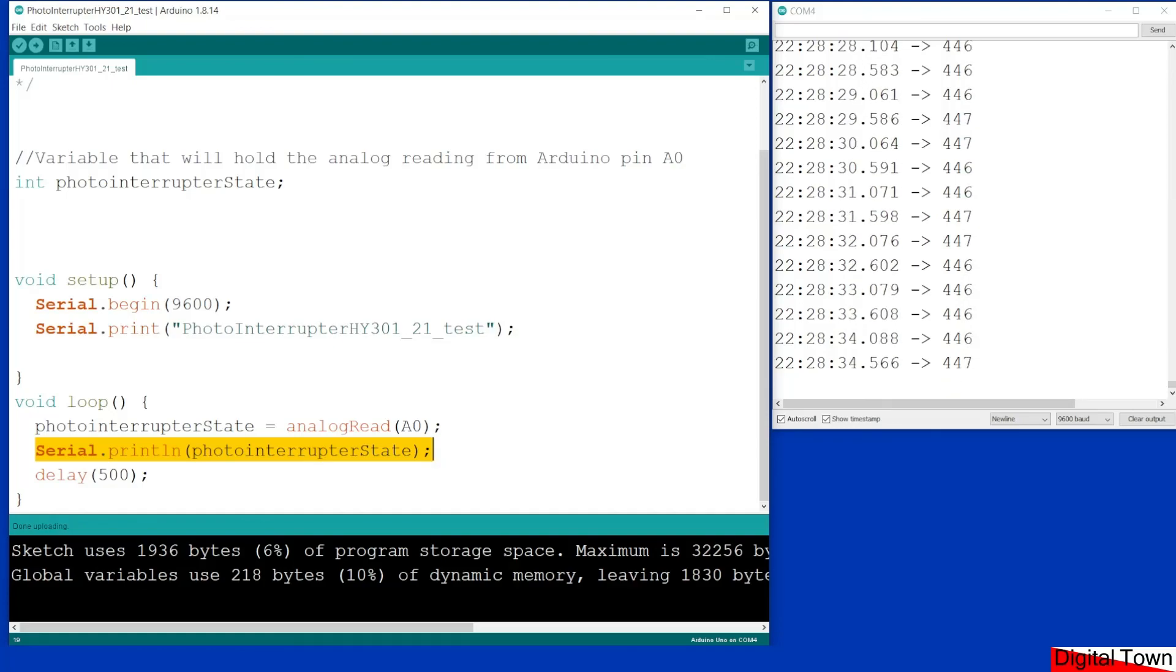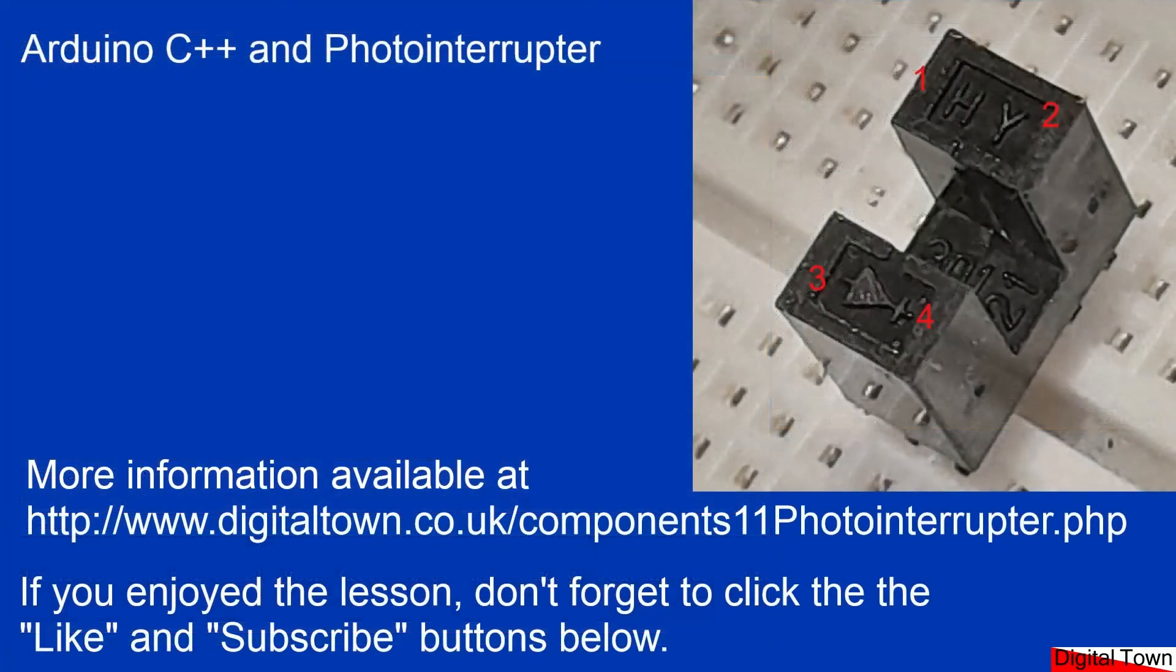And that's about all there is to this video today. The great thing you can do is once you've got used to these things, I've done projects where I've had multiple photo interrupters being polled or you can poll a single one, but as you can see it's pretty easy. Again all the information is on the Digital Town website, so thanks for watching and if it's been useful please click the like and subscribe. Bye for now.